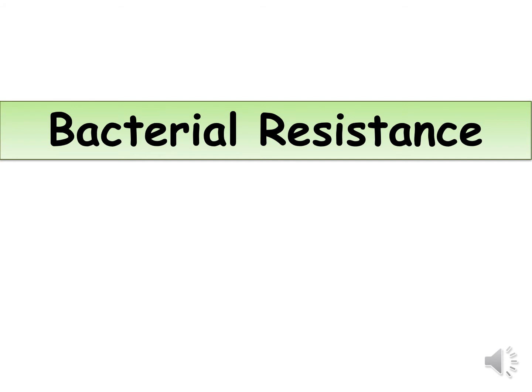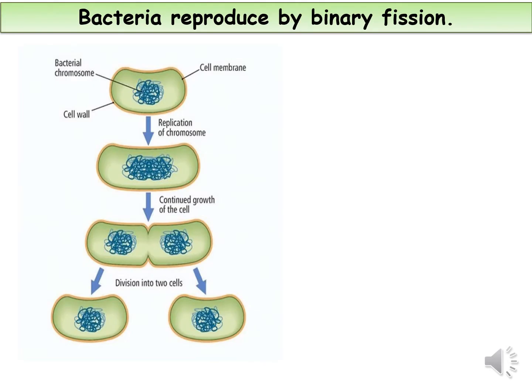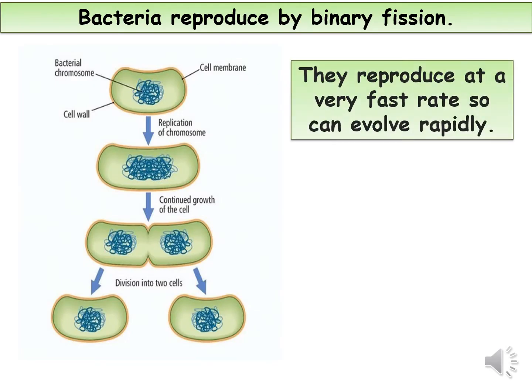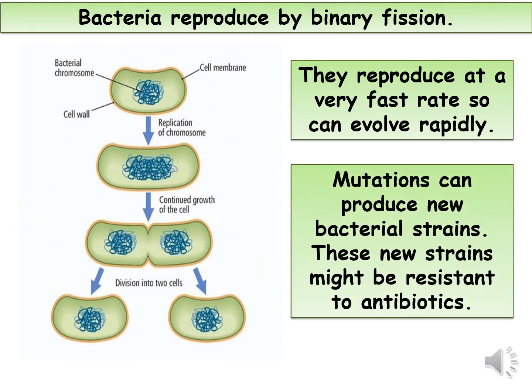This video is about bacterial resistance. Bacteria reproduce by binary fission and at a very fast rate, so they can evolve rapidly. Mutations can produce new bacterial strains, and these new strains might be resistant to antibiotics.